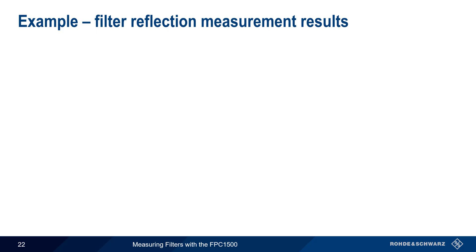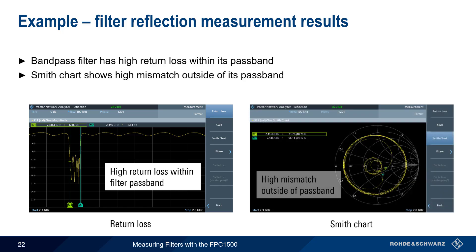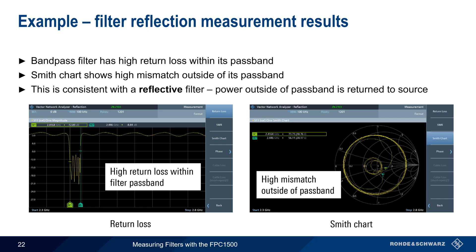Next, let's look at some filter reflection measurement results. Here we're looking at a bandpass filter, which has a high return loss within the filter passband, meaning that power outside of this band is returned to the source. Looking at the Smith chart display, we can see a high degree of impedance mismatch outside of the passband — the trace lies near the edge of the Smith chart for the stopband frequencies. Both of these plots are consistent with a reflective filter that attenuates signals by returning power outside of the passband back towards the source.